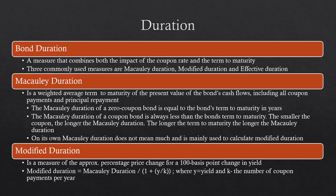Duration is another important concept. Duration is a measure that combines both the impact of the coupon rate and the term to maturity, and compares it against interest rates. Three commonly used measures are Macaulay duration, modified duration, and effective duration. Macaulay duration is a weighted average term to maturity of the present value of a bond's cash flows including all coupon payments and principal repayment. The Macaulay duration of a zero coupon bond equals the bond's term to maturity in years. The Macaulay duration of a coupon bond is always less than the bond's term to maturity, and the smaller the coupon, the longer the Macaulay duration. The longer the term to maturity, the longer the Macaulay duration.